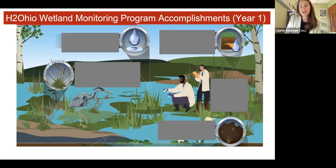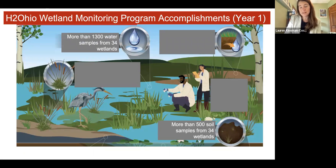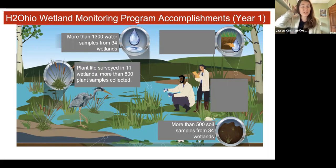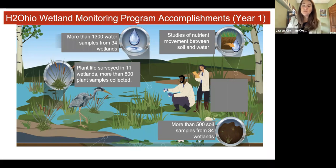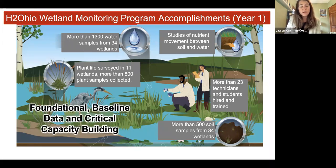Just to zoom out: the Forter Bridge case study is just a small nugget of what we've accomplished throughout the entire program. We've collected over 1,300 water samples from 34 wetlands and 500 soil samples from 34 wetlands — in fact more wetlands than have been completed, because where relevant we're collecting pre-construction sampling to understand how the land is prior to being restored. We've surveyed plant life in 11 wetlands and collected more than 800 samples of plant biomass. We've begun studying the mechanisms of how nutrients move between soil and water. And we've really expanded our capacity by hiring more than 23 technicians and students, letting us collect important foundational baseline data.